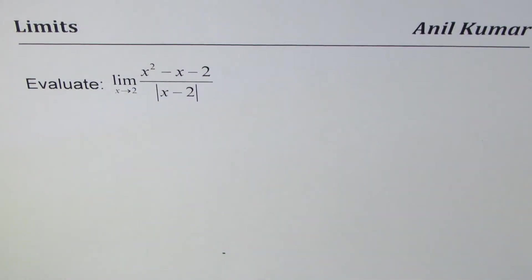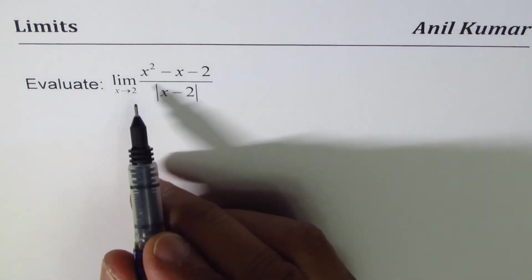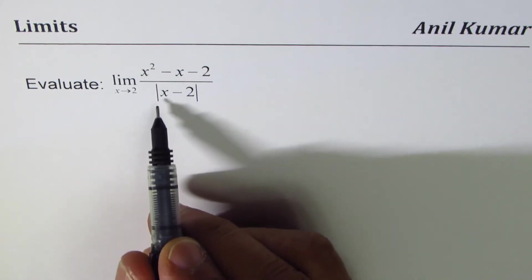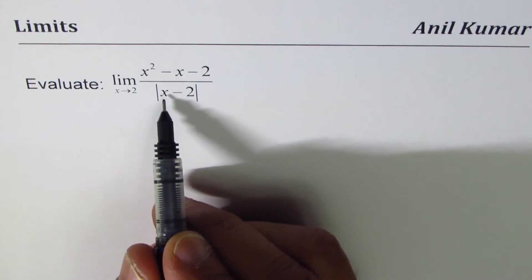I'm Anil Kumar and in this video we'll find the limit of a function which involves an absolute function. The question is to evaluate the limit when x approaches 2 for x squared minus x minus 2 divided by the absolute value of x minus 2.